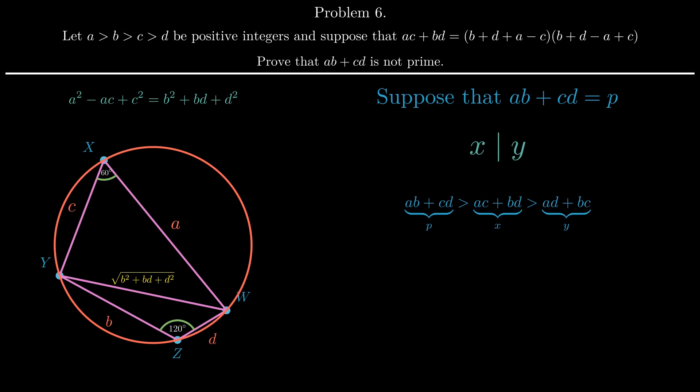However, this is absurd as x is greater than y, and both are positive. So we have reached a contradiction. Thus, our assumption that ab plus cd is prime is therefore false. Hence, we're done.